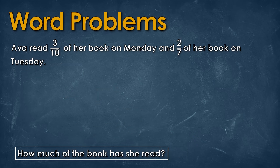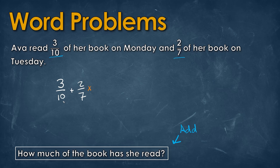Reading the next word problem, it asks how much of the book has she read — that means addition. Ava read 3 over 10 of her book on Monday and 2 over 7 on Tuesday, giving us 3 over 10 plus 2 over 7. There's a useful trick here: instead of finding the least common denominator, you can multiply each fraction by the opposite denominator. So multiply 3 over 10 by 7 over 7 and multiply 2 over 7 by 10 over 10. This always works, though it can give large numbers — in this case the numbers are small enough to stay manageable.